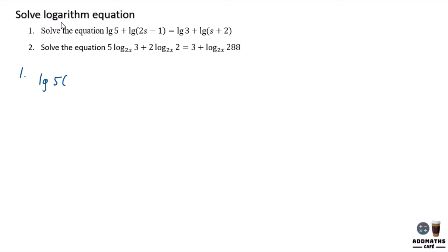So log 5 times 2x minus 1 equals log 3 times x plus 2, because it's a plus it's a times. Since both of the logarithm bases are the same, you can actually cut it out. It'll be 5 times 2x minus 1 equal to 3 times x plus 2.